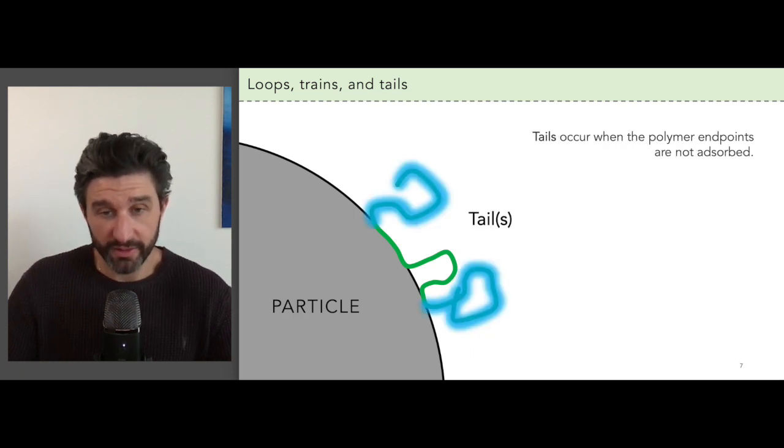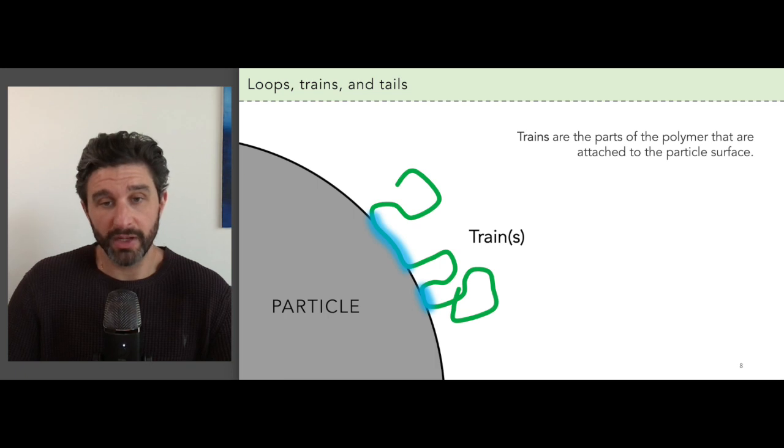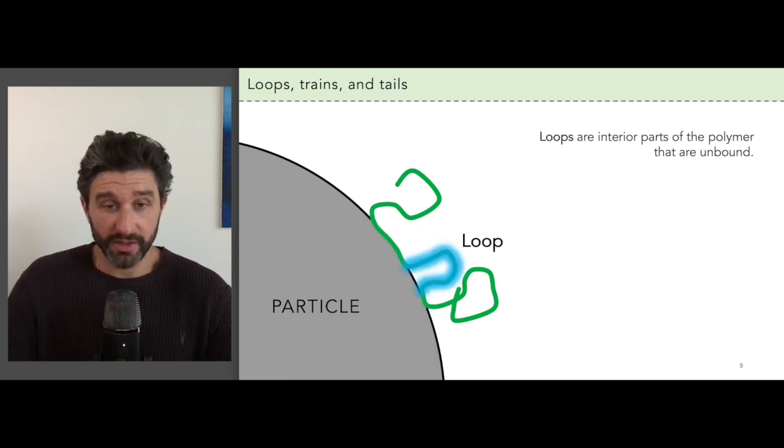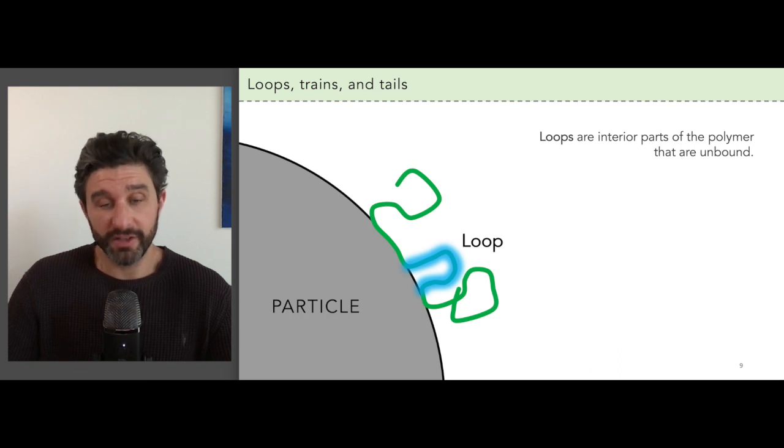The first is tails formed when the endpoint of the polymer chain are not attached to the surface. The second is trains. These are the parts of the polymer that are directly connected to the particle. And the third is loops. These are interior parts of the polymer that are not absorbed forming arc-like structures extending away from the surface.